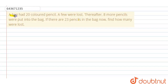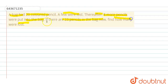The question says: a bag had 20 colored pencils. A few were lost. Thereafter, eight more pencils were put into the bag. If there are 23 pencils in the bag now, find how many were lost. So in this question, it is given that a bag contained 20 colored pencils, from which a few were lost. After that, eight more pencils were added. At present there are 23 pencils in the bag. We have to find the number of lost pencils.